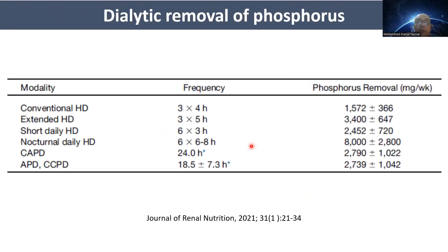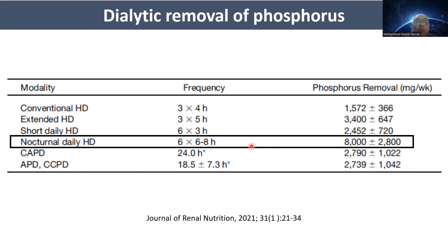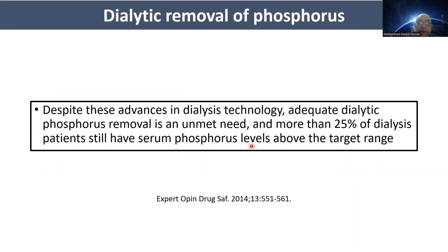The best phosphate removal is achieved with nocturnal daily hemodialysis — six sessions per week, each lasting six to eight hours. Despite this, adequate dialytic removal of phosphate remains an unmet need, and more than 25% of dialysis patients still have serum phosphorus levels above the target range. Dialysis alone is not totally effective in managing hyperphosphatemia.